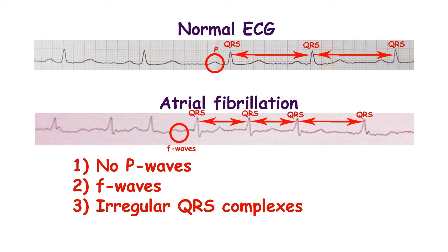Diagnosis of atrial fibrillation is based on ECG. There is no obvious P wave, which normally represents atrial depolarization, but you can see small fibrillatory waves of different amplitude and duration. Ventricular complexes are irregular and often frequent, with heart rate exceeding 100 beats per minute. Often paroxysmal atrial fibrillation cannot be found during routine ECG, so devices for long-term ECG registration such as Holter ECG or loop recorders are helpful. Patients with implanted recording devices or implanted cardioverter-defibrillators have much better chances of detecting atrial fibrillation.